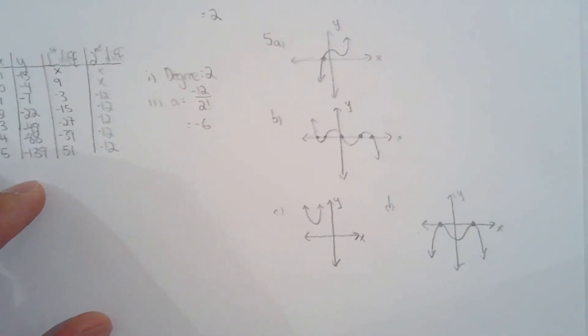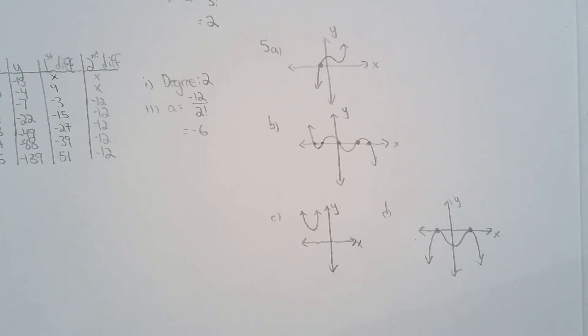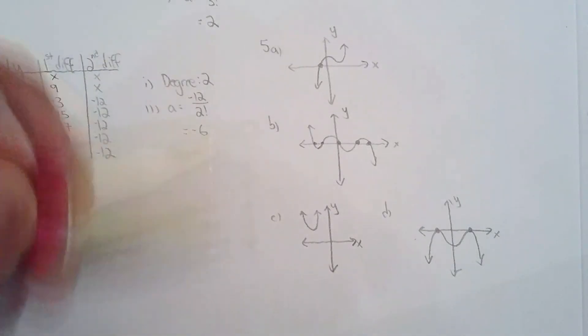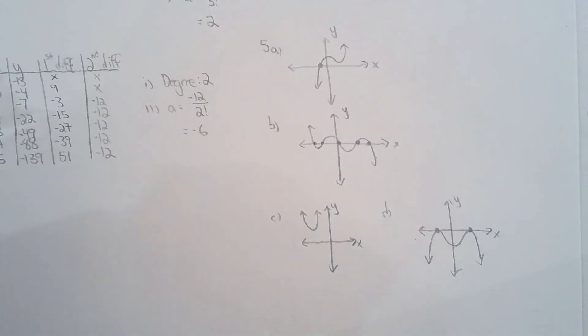For question 5, they just wanted me to draw some graphs given the leading coefficient and the x-intercepts. Your graphs don't have to look exactly like mine, but the properties that they asked for should exist in your graphs.